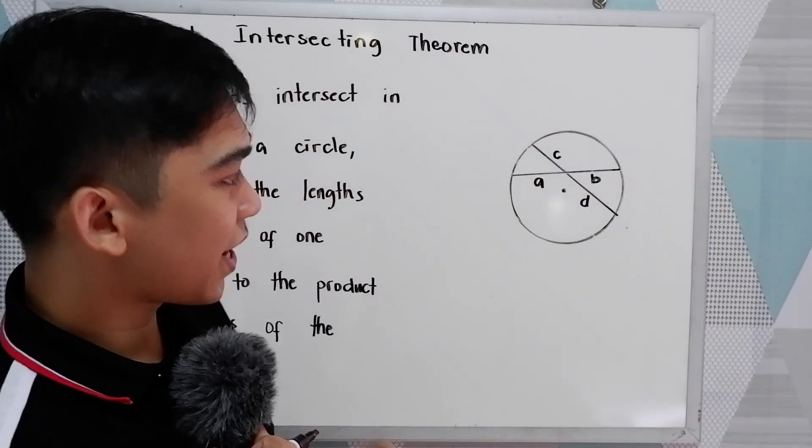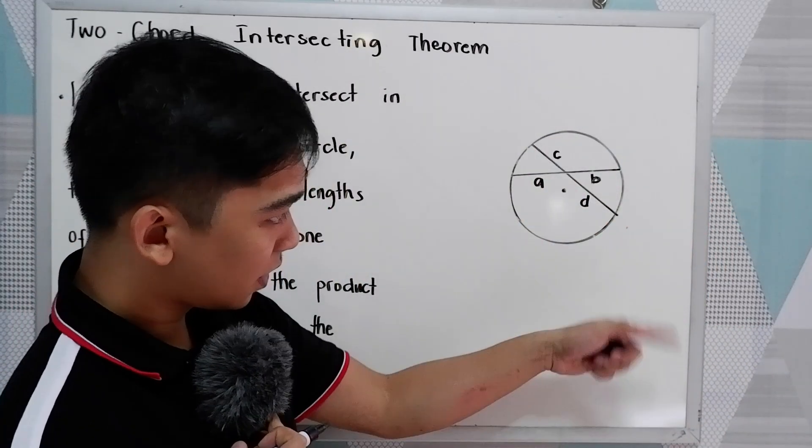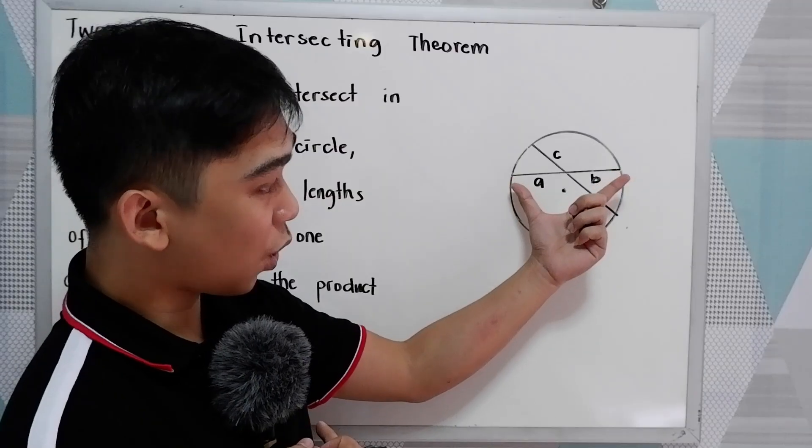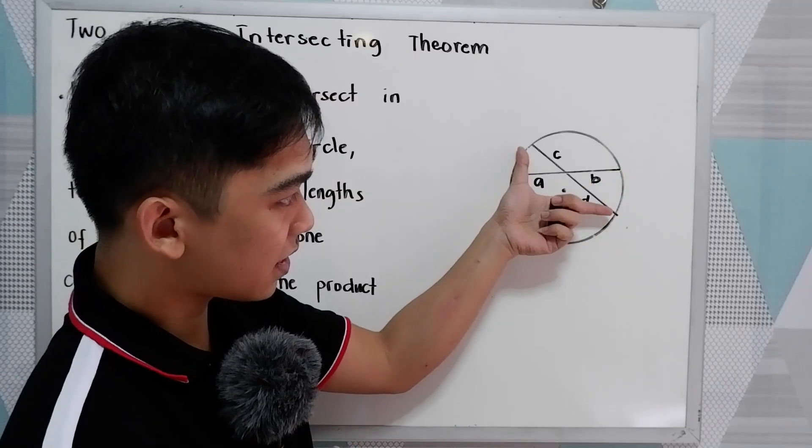Now, let us illustrate. We have a circle here. Then, we have two chords. The first one and the second one.